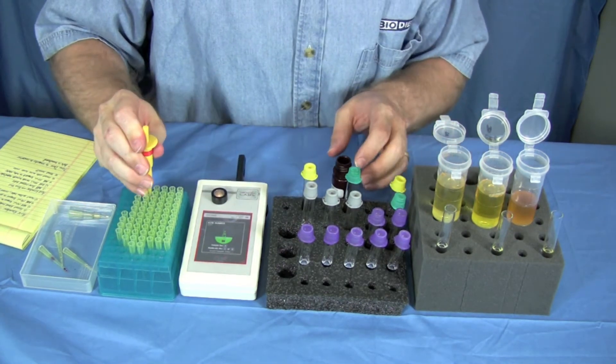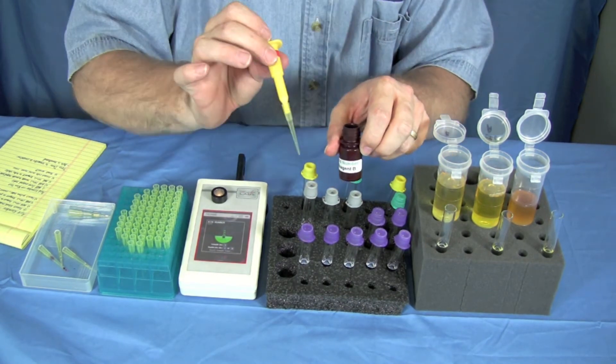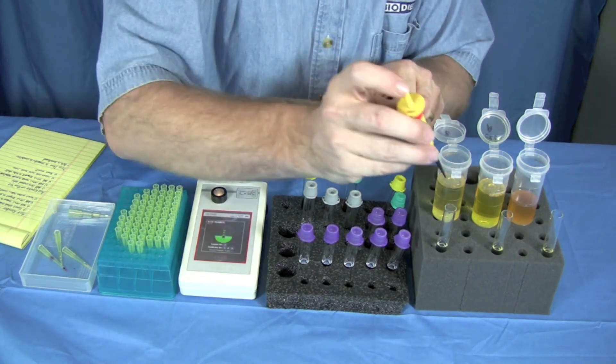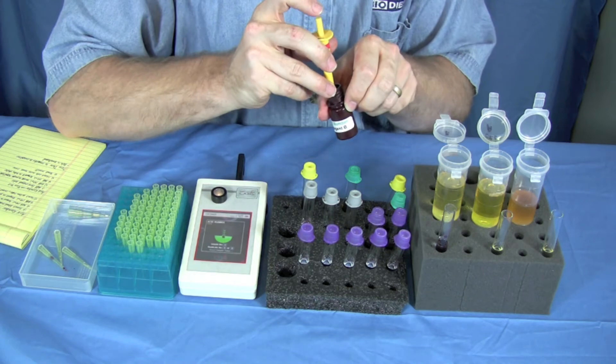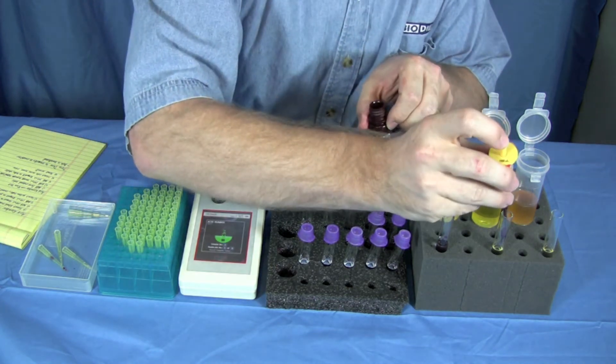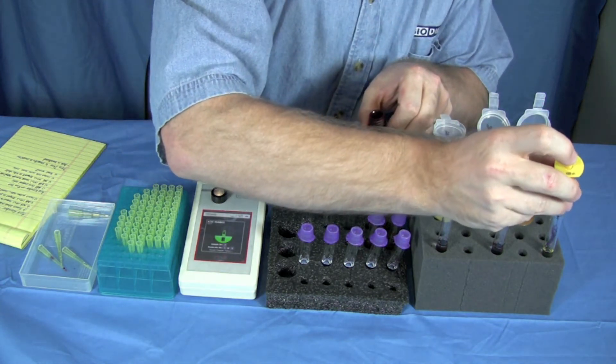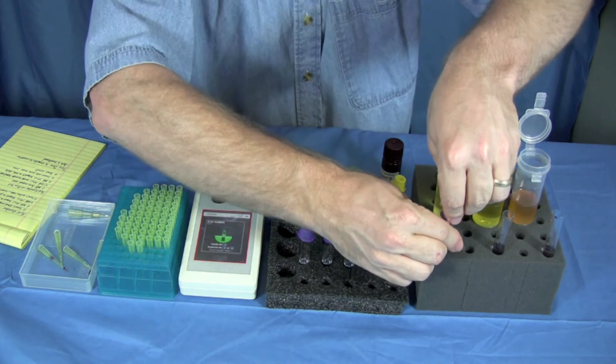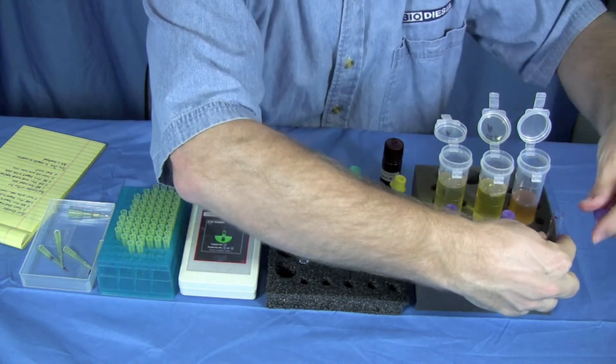To prepare the rest of the samples we use our reagent B, 150 microliters. 150 in there, 150 in there, 150 in here. We then replace the caps on the tubes that we're using. We're going to shake these vigorously and then we can get started testing.